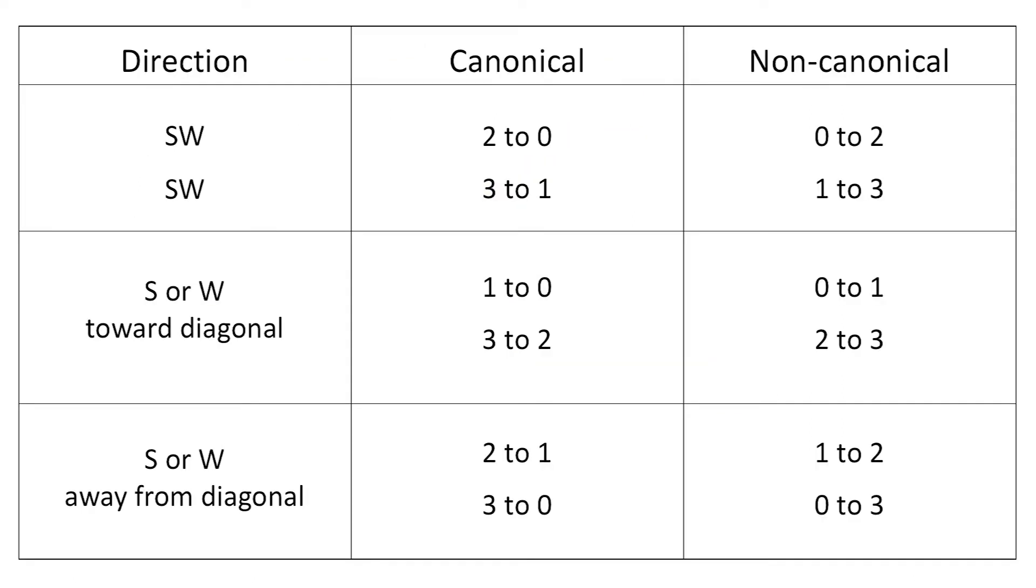All of these moves decrease the Grundy number. Although moves in these same directions can often increase it, such non-canonical moves need not exist. Possibly the king is on an edge of the board or on the diagonal. He can't move off the board or toward the diagonal if he is already there.